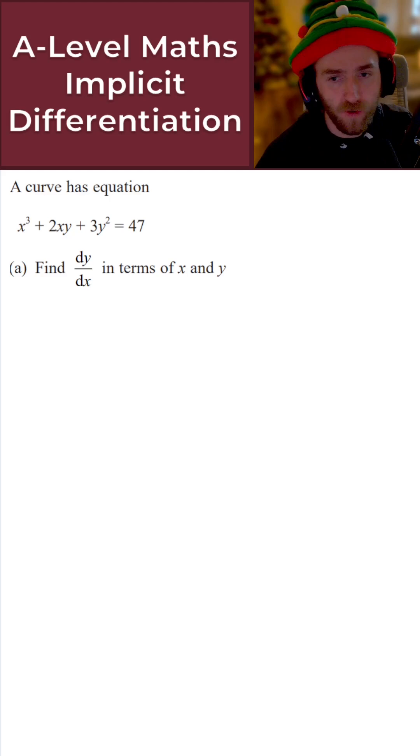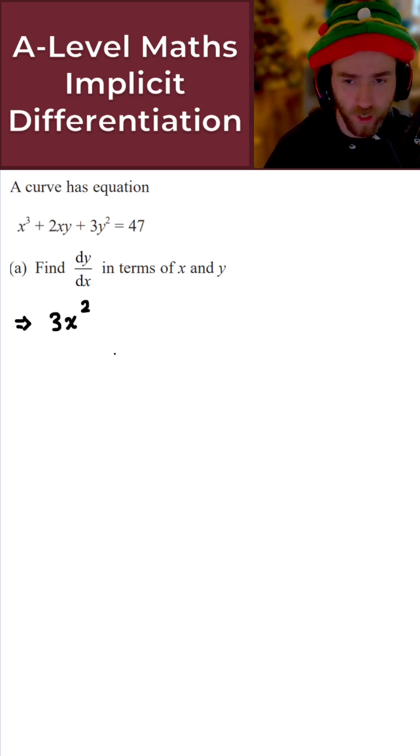To find dy by dx, I'm going to go term by term through the original equation. Let's do that underneath. We'll start with the first term, which is x³. If I differentiate that with respect to x, nice and easy, we simply get 3x².